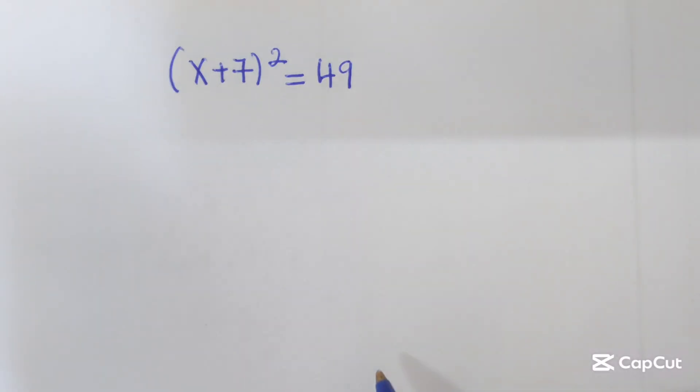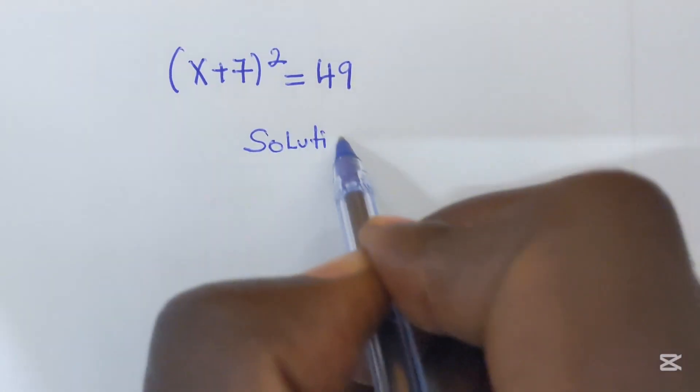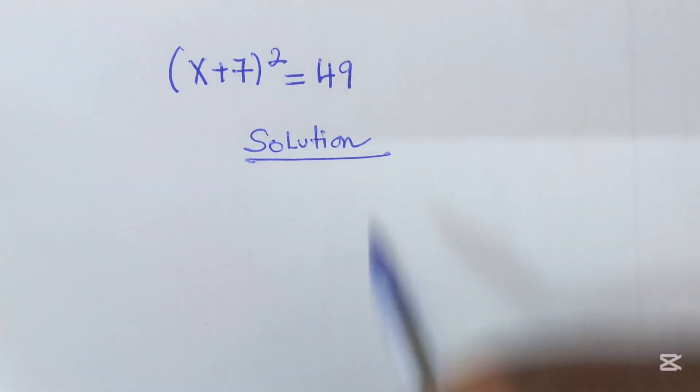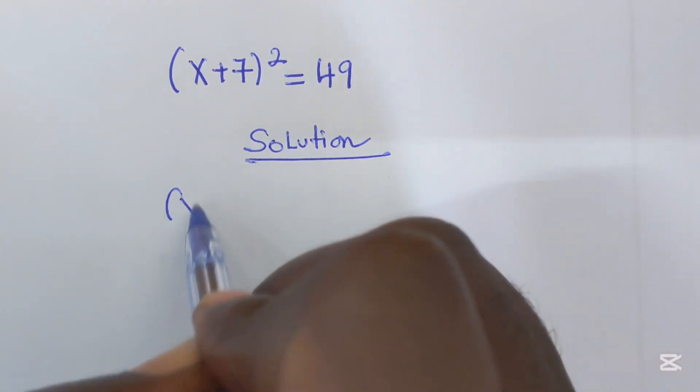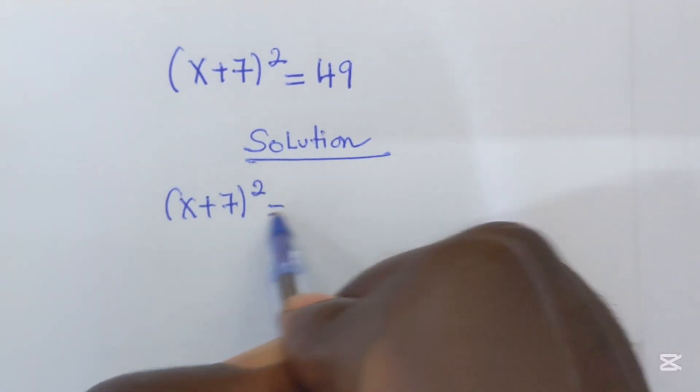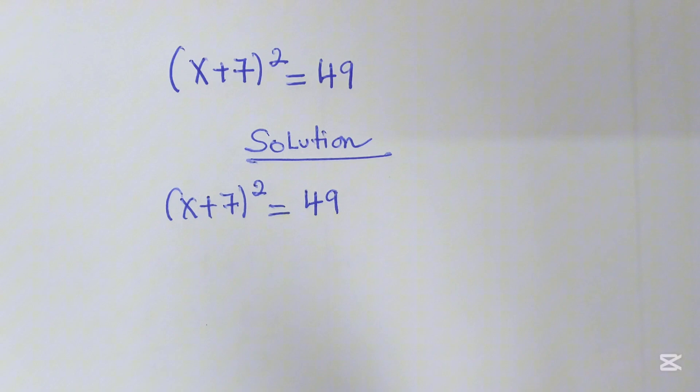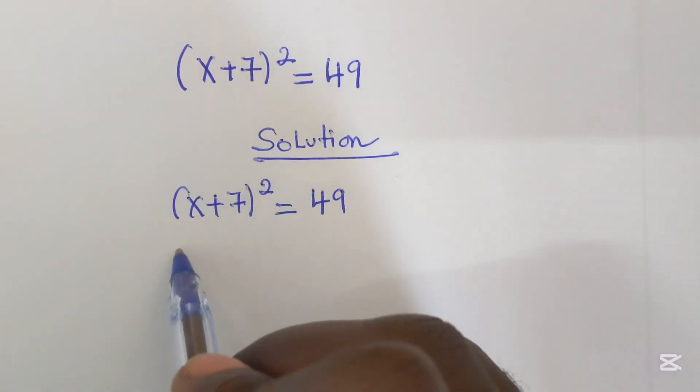Welcome to this platform. Let's provide the solution very quickly. The first thing here is to copy what we have: (x+7)² = 49.